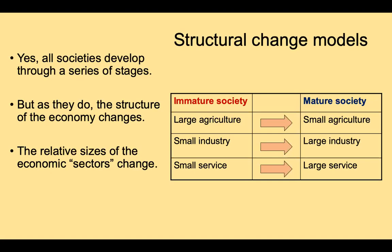For simplification we think of this transformation in terms of three sectors: the agricultural sector, the industrial sector including manufacturing, and the service sector. When we talk about the size of these sectors, we're talking about the share of labor employed in them. We differentiate between an immature or primitive society — bear with us, this is language from the 1950s, 60s, and 70s — and a mature or more developed society.